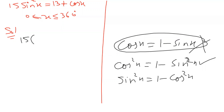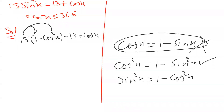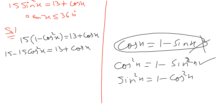So this value will go in place of sine squared. I'm writing 15 times (one minus cosine squared x) equals 13 plus cosine x. Up till now no trouble. So 15 times one minus 15 cosine squared — it turns to be 15 minus 15 cosine squared x equals 13 plus cosine x.